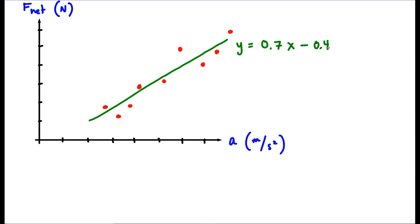Maybe something like this. If we look at that equation and this graph, we can analyze whether there were any random errors or systematic errors.